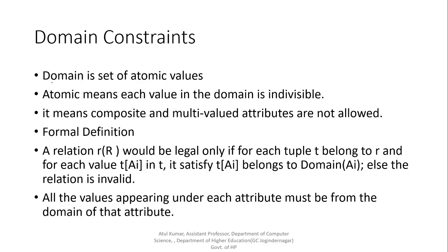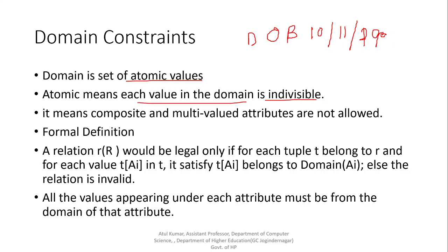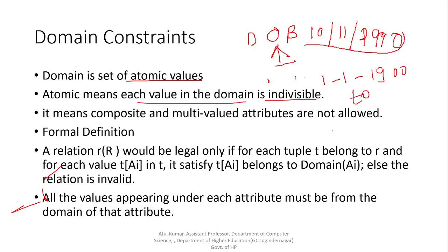So what is a domain? A domain is a particular set of atomic values. The word atomic here means that each value in the domain is individual. For example, suppose we have an attribute date of birth and its value is 10-11-1990. This attribute date of birth takes date values, and its domain ranges from 1-1-1900 to the current date.